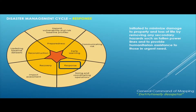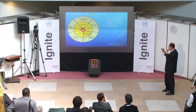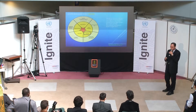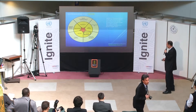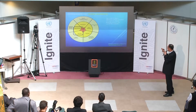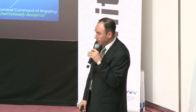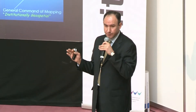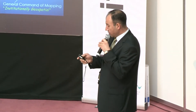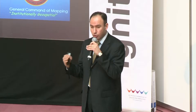The response phase of the disaster management cycle is initiated to minimize damage to property and loss of life by removing secondary hazards such as fallen power lines, and to provide humanitarian assistance to those in urgent need. The recovery and reconstruction phases focus on logistics associated with the movement of people and supplies, financial resources, and construction methods. The key question is how to collect geospatial data, who will collect it, and how to coordinate all involved parties.